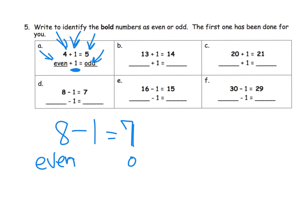And we know that seven is odd. So if you start with an even number and you subtract one, you get an odd. So we would write even and odd right here.